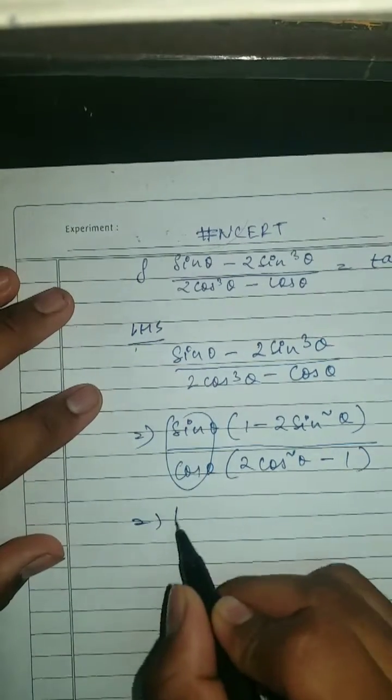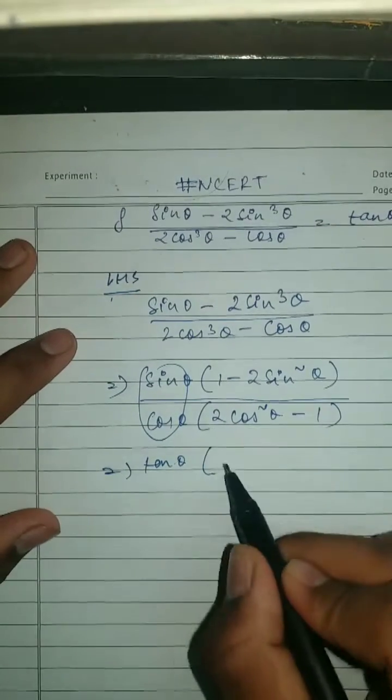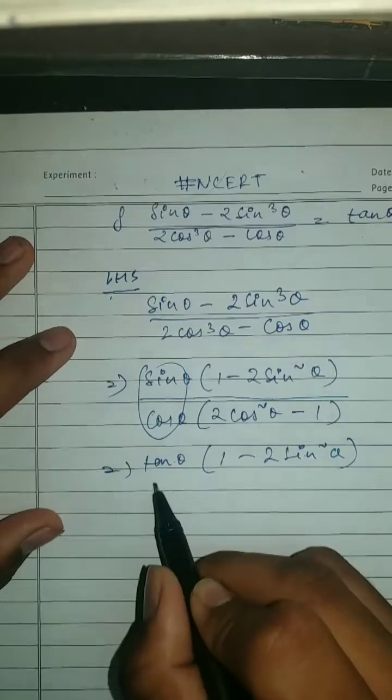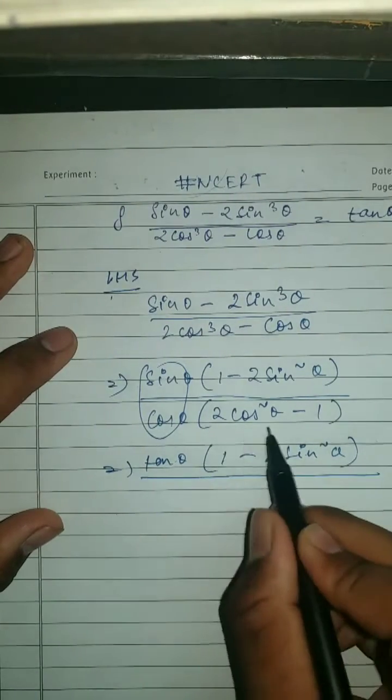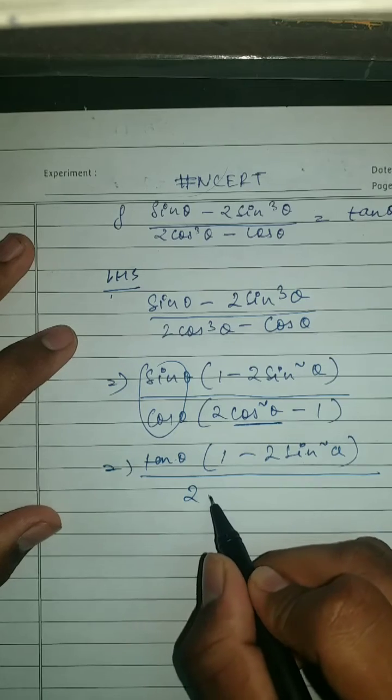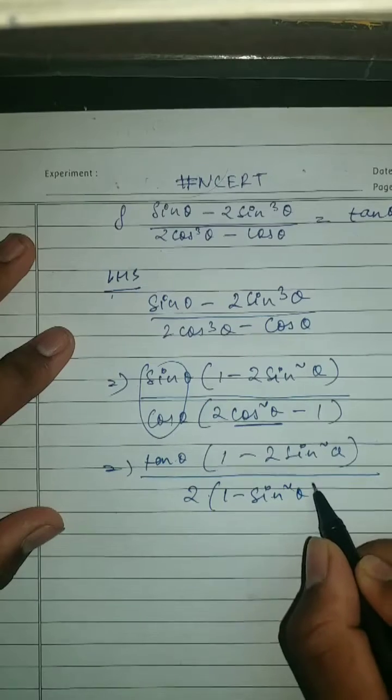This will give us tan theta. And here, 1 minus 2 sine square theta upon 2, we will open this, so it should be 2 times bracket 1 minus sine square theta minus 1.